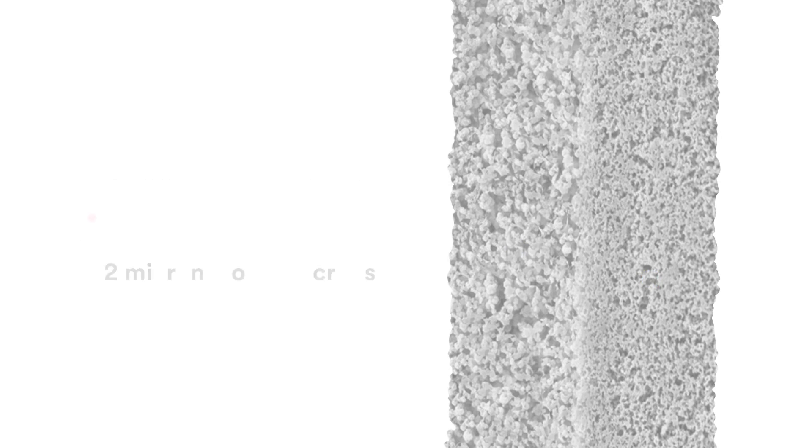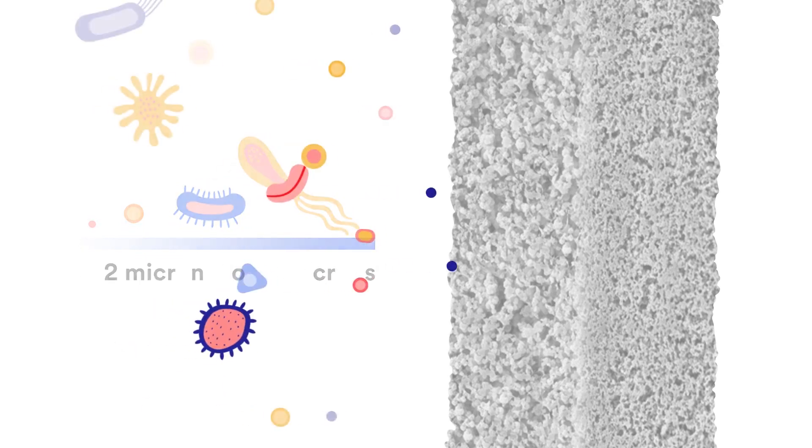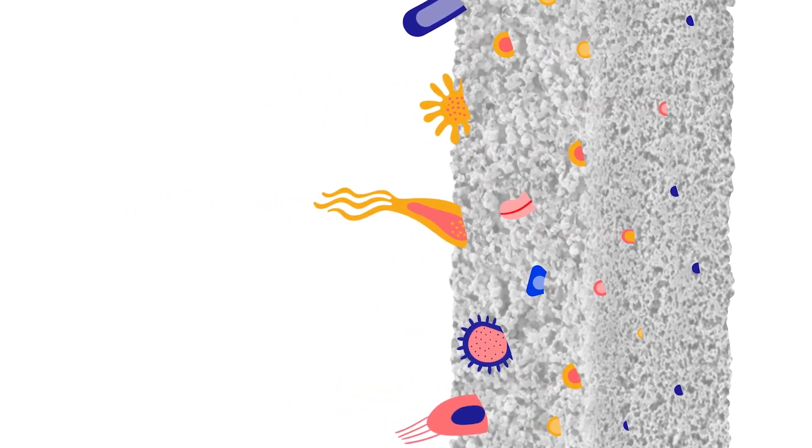Since bacteria and parasites, cysts, are common types of microorganisms in water, microscopic in size between 0.2 and 10 microns, this 3M technology helps filter or reduce these microorganisms.